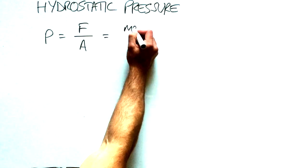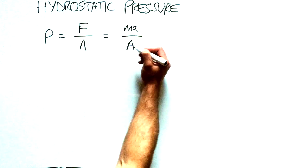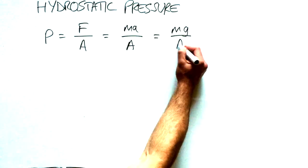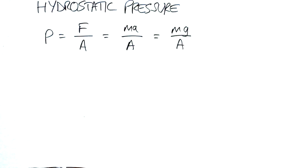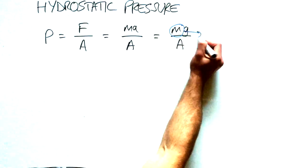So pressure is equal to force divided by area, which is equal to mass times acceleration divided by area, which on the surface of the earth, the accelerating force is g, so that's mass times g divided by area.